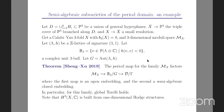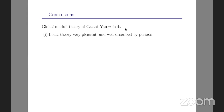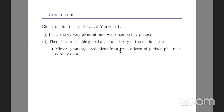Let me draw some conclusions. Locally the moduli theory of Calabi-Yau N-folds is very pleasant and well described by periods. There's a reasonable global algebraic theory of the moduli space M, which is quasi-projective. I didn't talk about mirror symmetry at all, but mirror symmetry predictions come from a precise form of periods on this space.